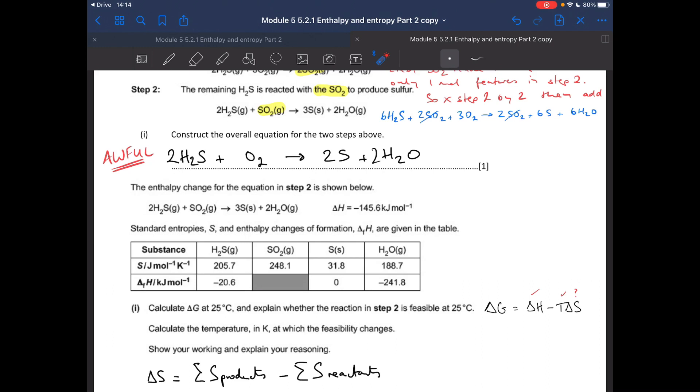Right, so moving on to the next part of the question, it's a fairly typical delta G calculation. So calculate delta G at 25 degrees C. Decide whether step 2 is feasible at that temperature, and then work out the temperature at which the feasibility changes. Okay, so the first thing, calculate delta G at 25 degrees C. Delta G equals delta H minus T delta S. Well we know the delta H, there it is there. Temperature is 25 degrees C. Delta S, we don't know, but we've got all these standard entropy values for everything in this equation. So we can work out delta S for that equation.